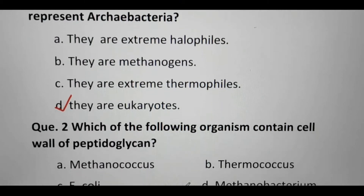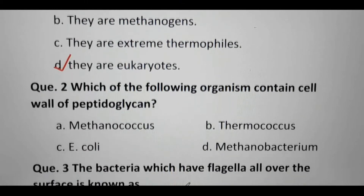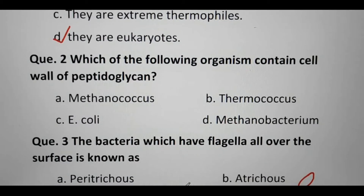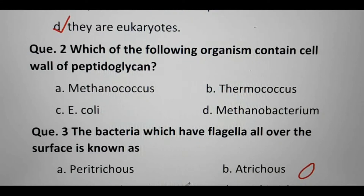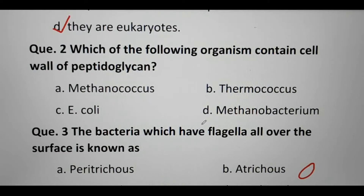Which of the following organisms contain a cell wall of peptidoglycan? Option A is Methanococcus, B is Thermococcus, C is E. coli, and D is Methanobacterium.